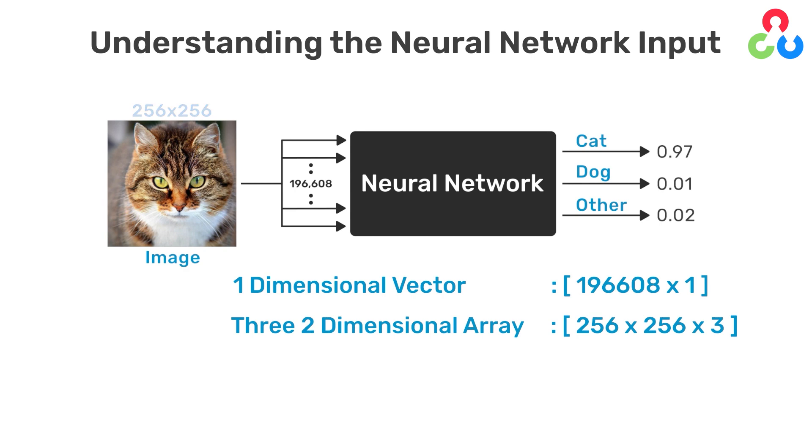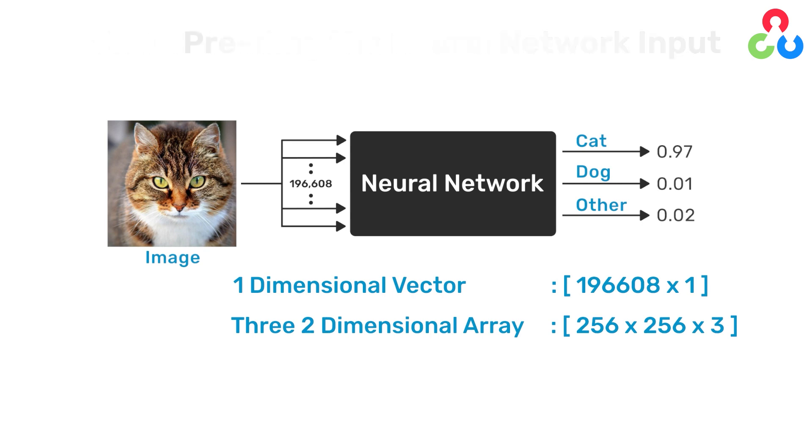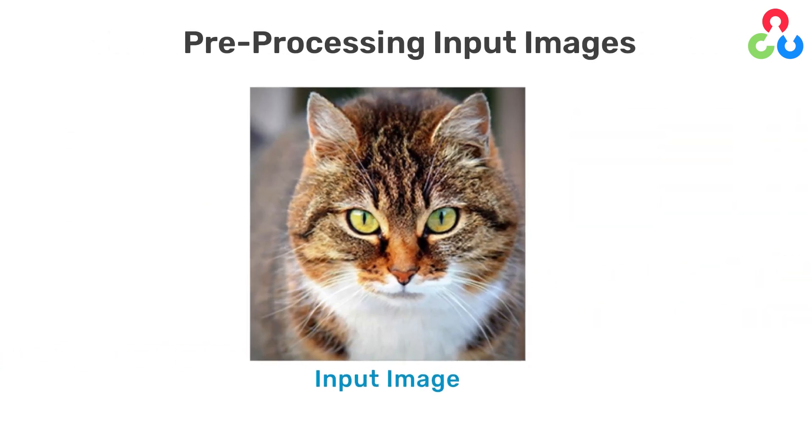But in either case, a particular network design will expect a fixed size and shape for the data. One thing that might come to mind here is what happens if our input image is some other size or happens to be a grayscale image.